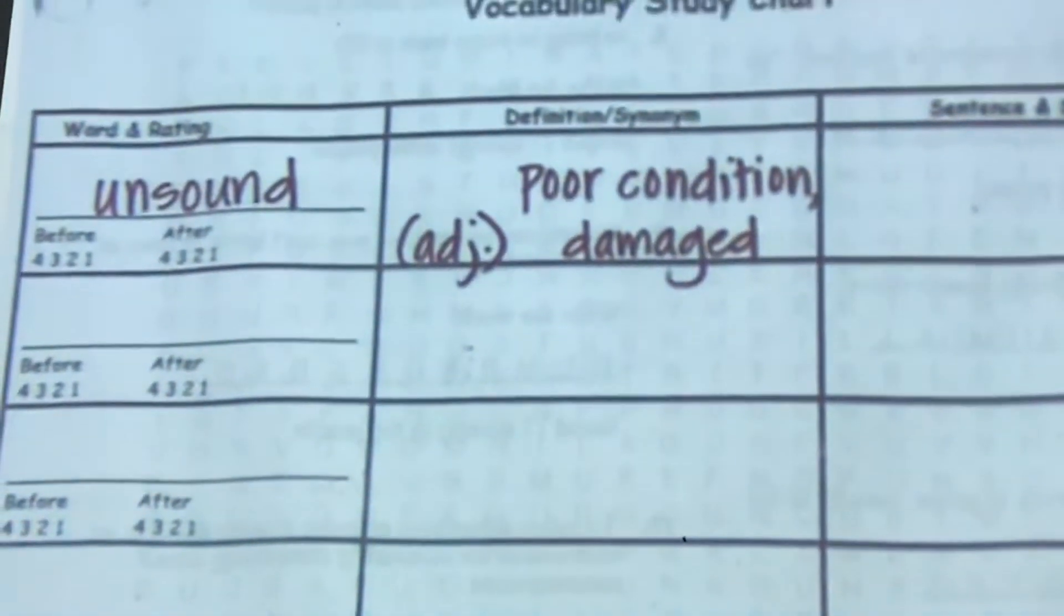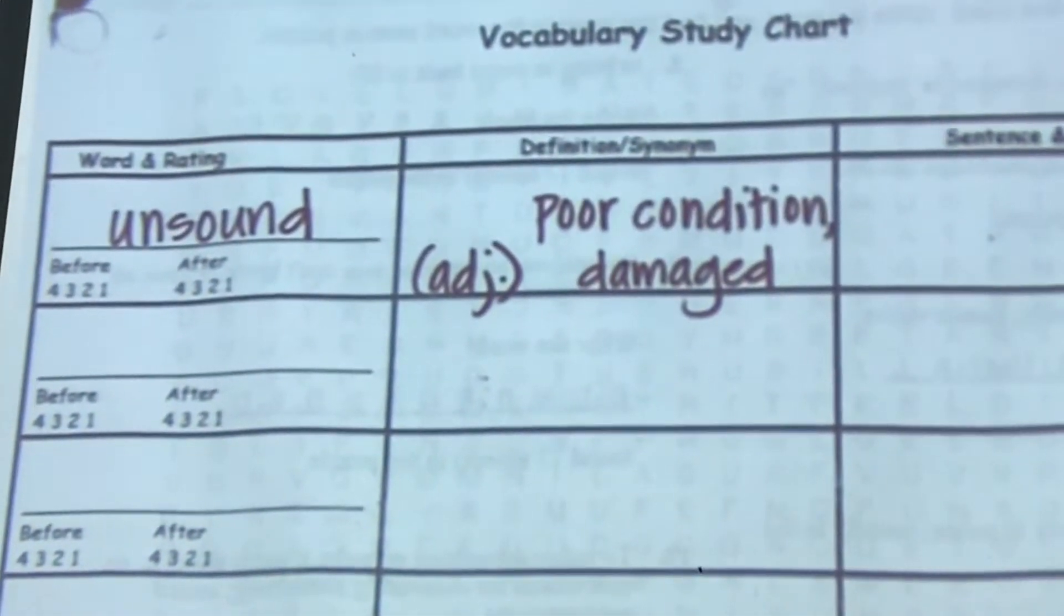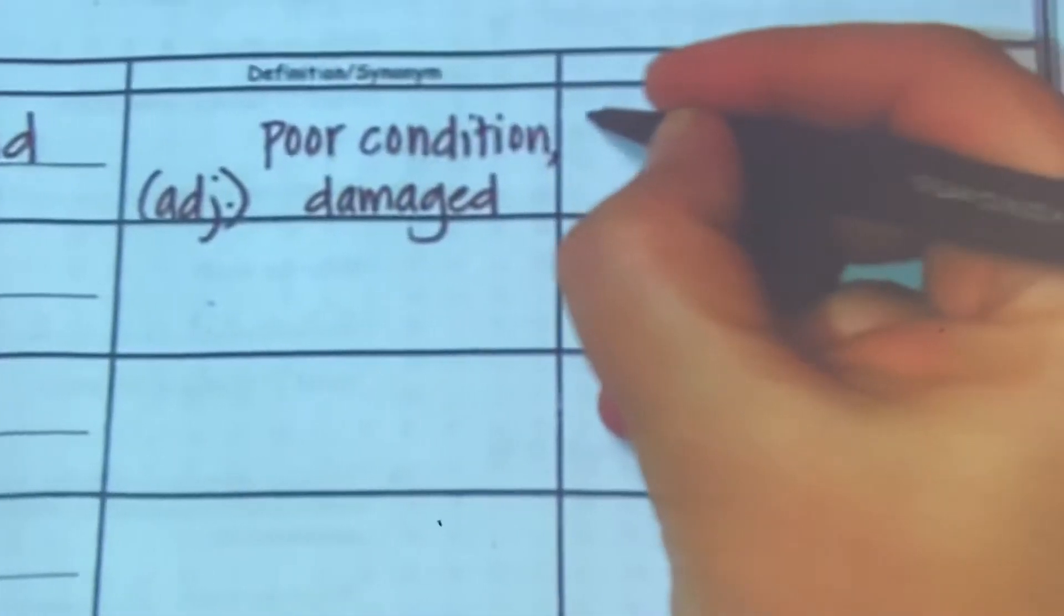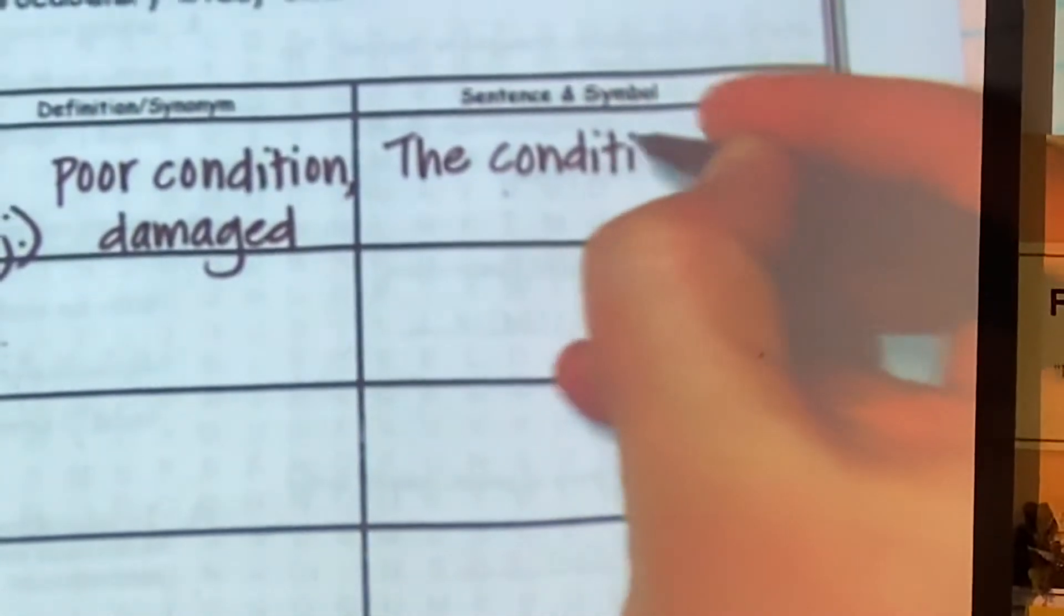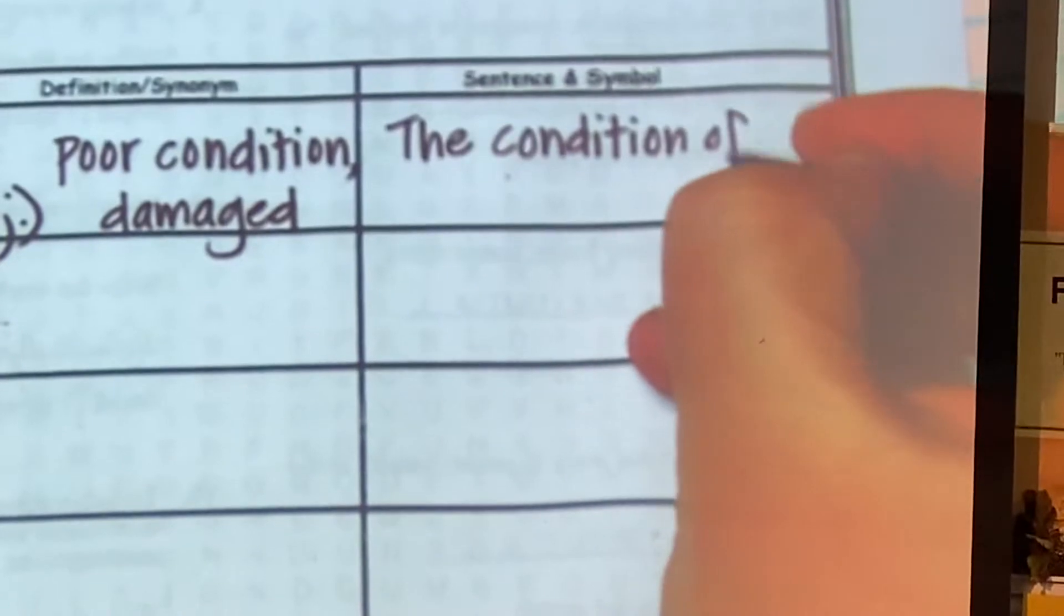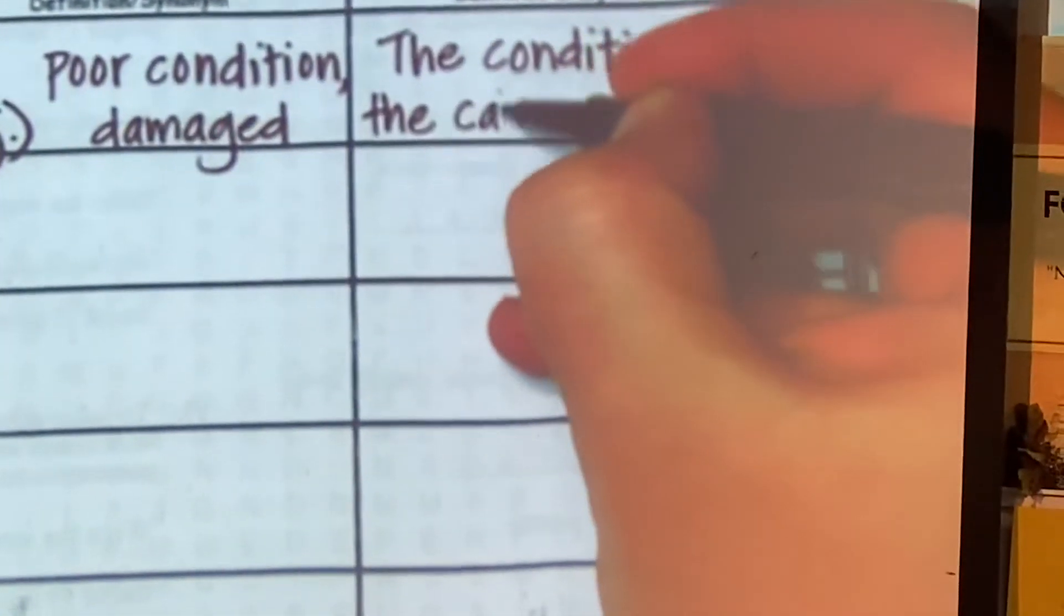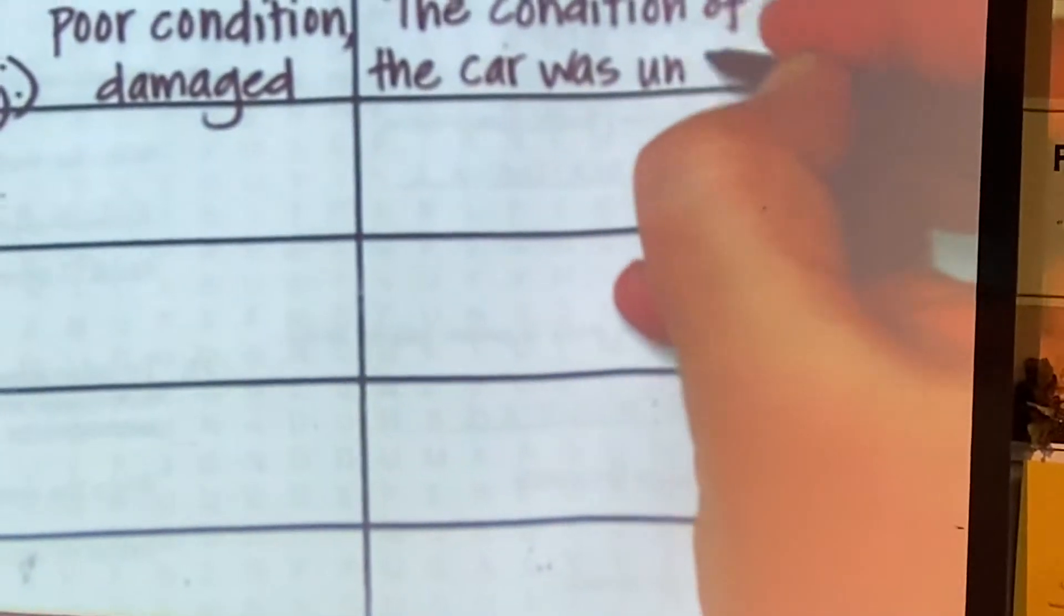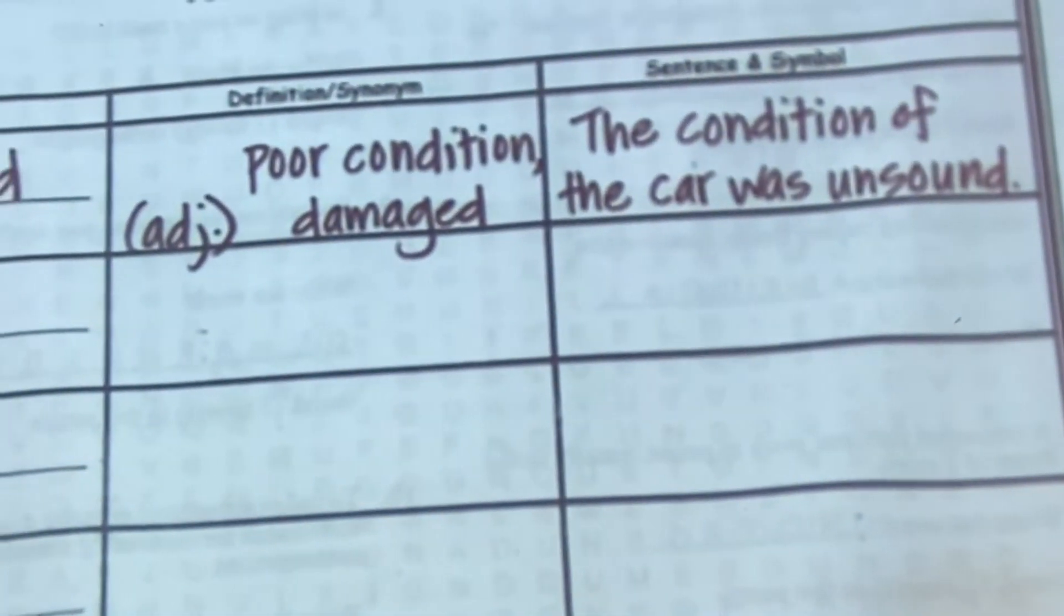So, poor condition, damaged. I'm always amazed how they can set up those carnival rides so quickly and tear them down and go to the next town. Damaged or decayed. What kind of a sentence can we do for unsound? Lane? The car was in unsound condition. Good. The condition of the car was unsound. There you go. You should be copying this down.